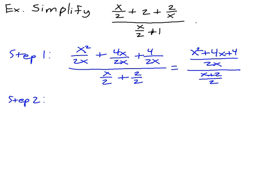Step 2 is to multiply the numerator fraction by the reciprocal of the denominator fraction. That's taking the x squared plus 4x plus 4 all over 2x and multiplying that by the reciprocal of the denominator fraction, which would be 2 over x plus 2.